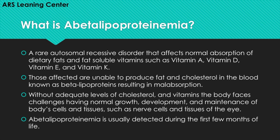What is abetalipoproteinemia? It is a rare autosomal recessive disorder that affects normal absorption of dietary fats and fat-soluble vitamins such as vitamin A, vitamin D, vitamin E, and vitamin K. Those affected are unable to produce fat and cholesterol in the blood known as beta-lipoproteins, resulting in malabsorption. Without adequate levels of cholesterol and vitamins, the body faces challenges having normal growth, development, and maintenance of the body's cells and tissues, such as nerve cells and tissues of the eye.